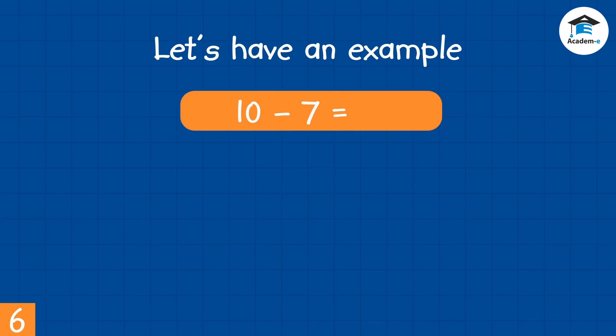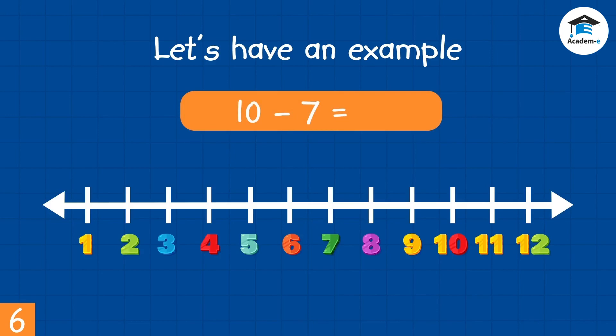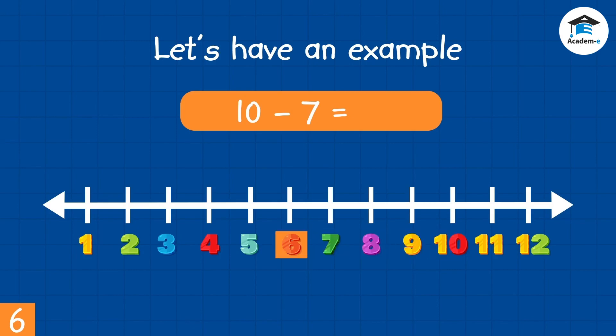Another example. 10 minus 7 is equal to? Let's use the number line. We start from 10, then count 7 steps backwards: 1, 2, 3, 4, 5, 6, 7. We stop at number 3. Therefore, 10 minus 7 is 3.